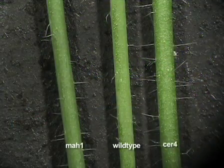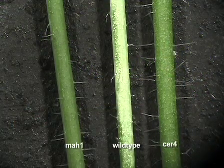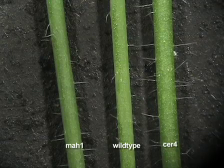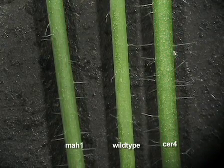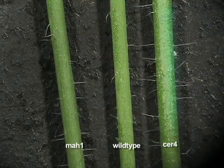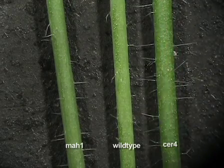When you look at the mutants, you can see that the inflorescence stems of wild-type plants is whitish, while the mutants have dark green shiny stems. One of the mutants that was isolated in this type of visual screen, done by Martin Koornneef and his co-workers, is this one, called eceriferum 4, or CER4.